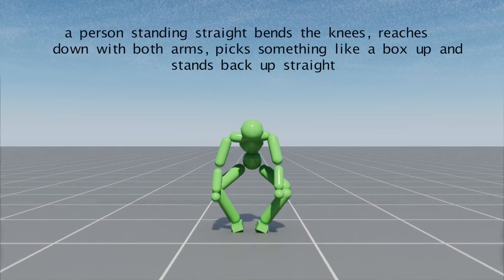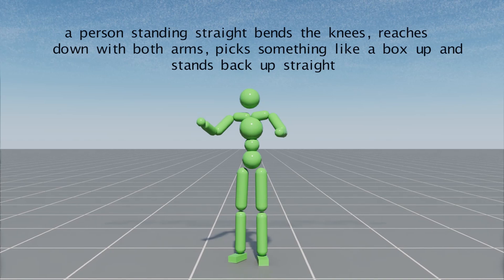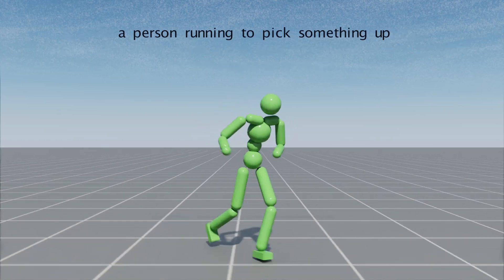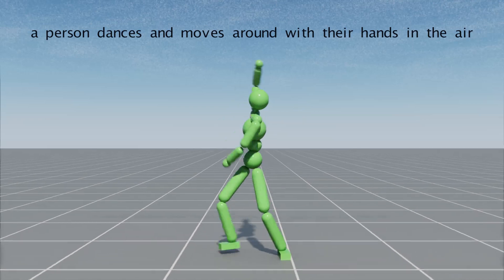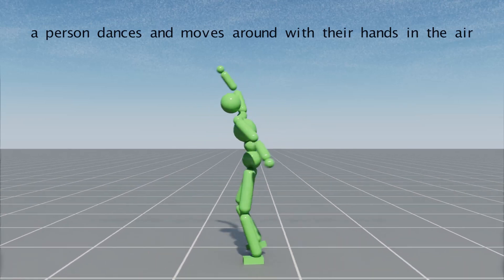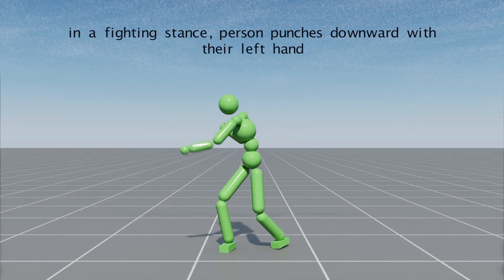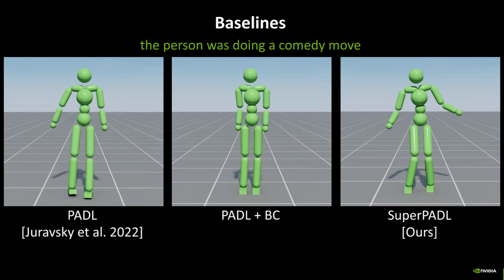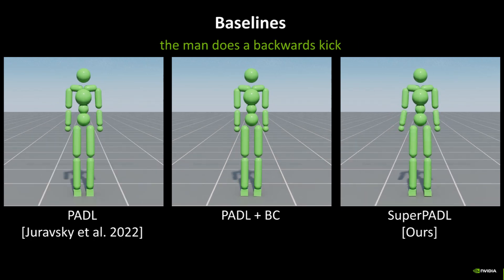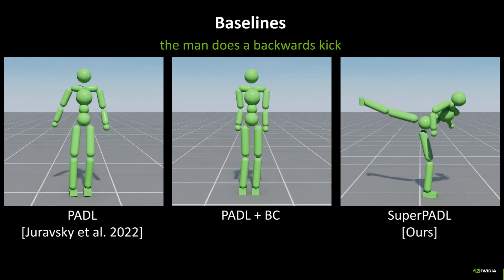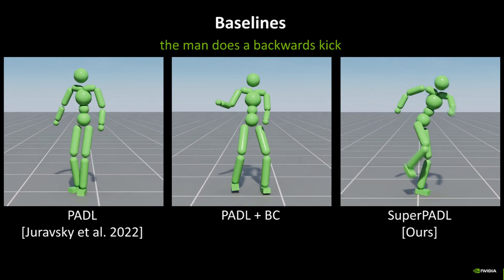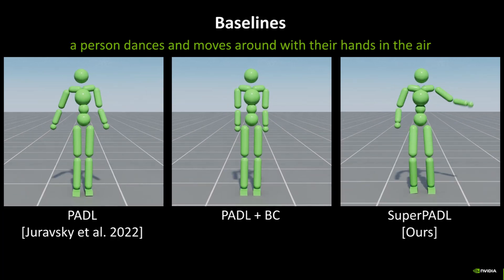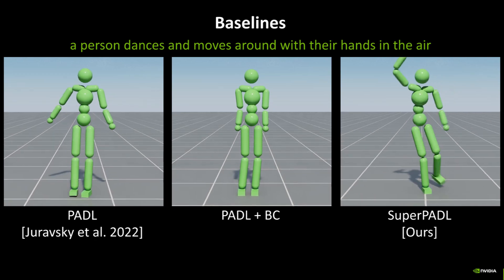The final controller can reproduce thousands of motions from text prompts, ranging from simple locomotion skills to more complicated behaviors such as dancing and martial arts. We compare our model to prior methods for training language-directed controllers for physically simulated characters. Prior methods struggle to learn from datasets of this scale and are unable to generate motions with the same quality as SuperPattle.